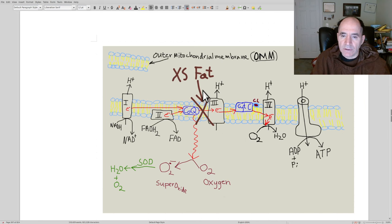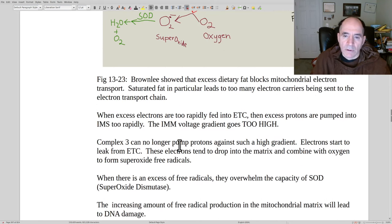We talked about excessive fat, especially saturated fat inhibiting electron transport. Brownlee is the one who figured out a lot of this stuff. He tested it and retested it and confirmed it in a bunch of different ways. When excessive electrons are fed too rapidly into electron transport chain, then excessive protons are pumped into the intermembranous space. The voltage goes too high and it starts to reverse at that point. It also starts to leak electrons at that point. And you generate more and more superoxides and you can potentially overwhelm the neutralization system of superoxide dismutase.